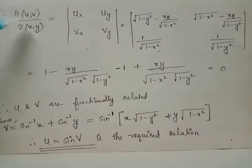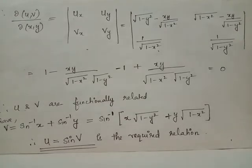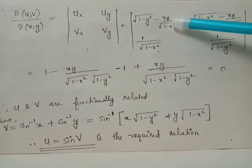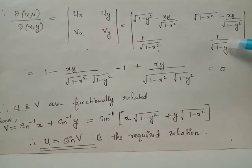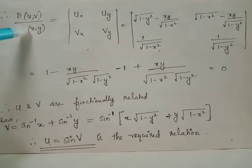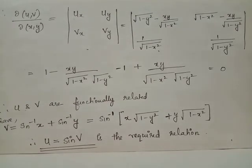Hence, we have the required determinant in this form, which when expanded gives the value 0. Multiplication of these two terms minus multiplication of these two terms gives 0, and hence we conclude that the required Jacobian takes the value 0.